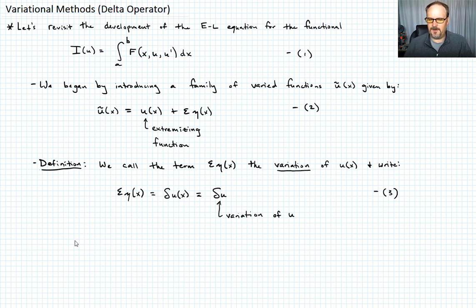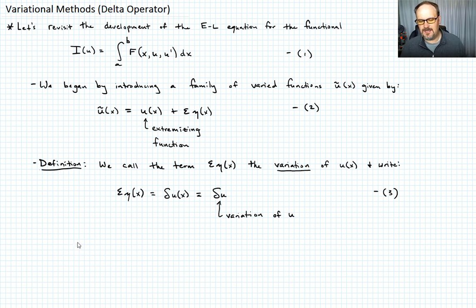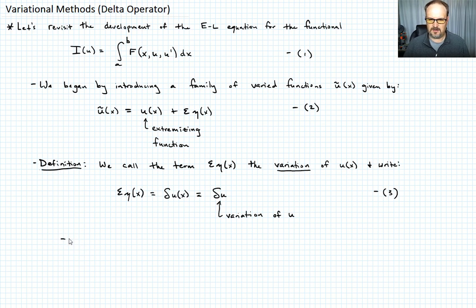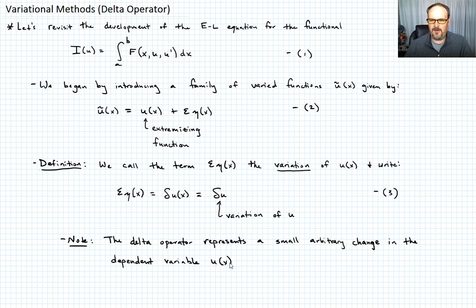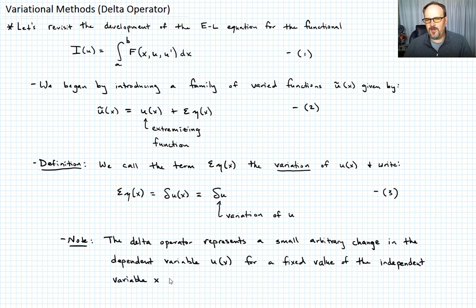Let's illustrate what this variation is — we call this the delta operator. The delta operator represents a small arbitrary change in the dependent variable u of x, and it represents that arbitrary change for a fixed value of the independent variable x. That means we don't associate a variation delta x with delta u.